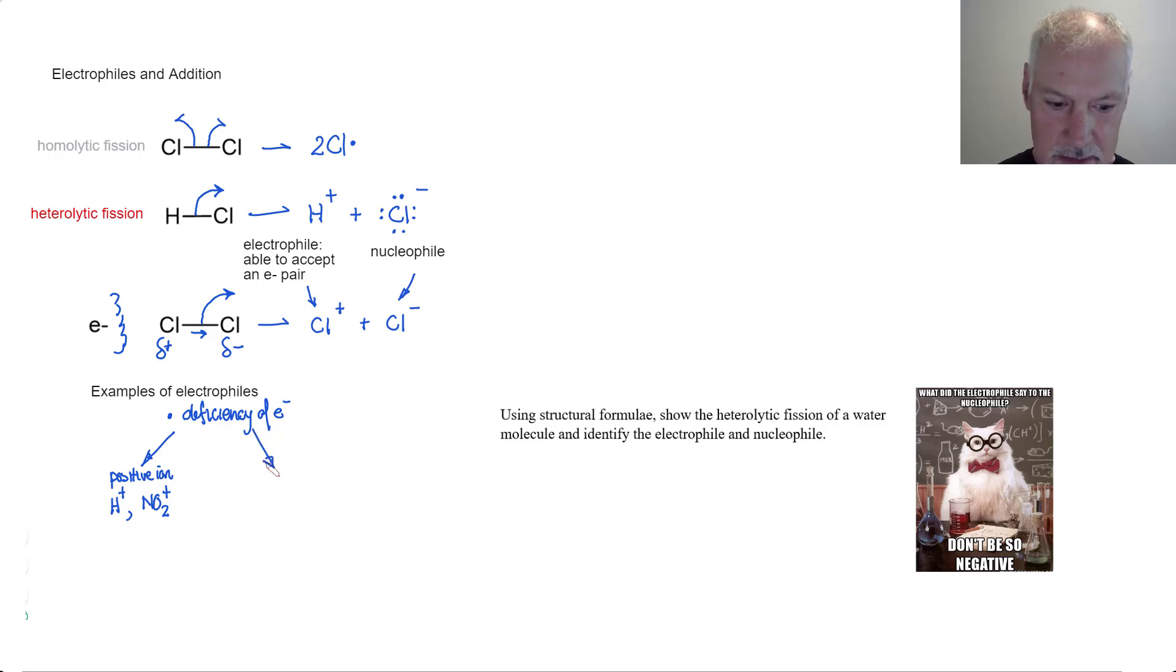But we can also generate electron deficiency another way. If we have molecules that can be polarized. For example, my HCl up here at the top. HCl is a polar molecule. With chlorine having a higher electronegativity, it is likely to become slightly negative and slightly positive. Thus, when the electrons leave, they tend to move towards the chlorine end of the molecule. As a result, HCl is a fairly good electrophile. So is water, because it can also be polarized.